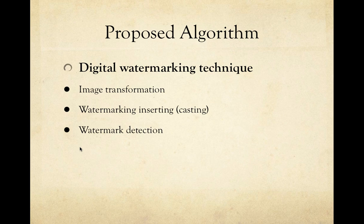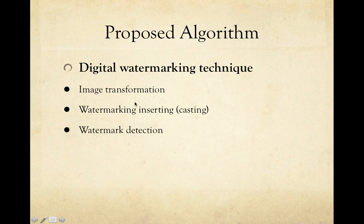Now let's move into the proposed algorithm. There are three phases for the digital watermarking technique: image transformation, watermark insertion, and watermark detection. For image transformation, DCT is applied to the image. The image is first divided into 8x8 sub-blocks, and then block DCT is applied instead of transforming the image as a whole. This also reduces computational cost.